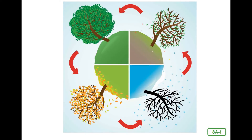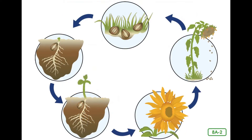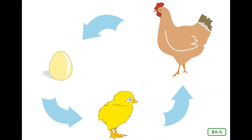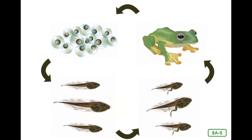Let's take a moment to review the different cycles we have learned about. The first cycle is the seasonal cycle — take some time to discuss what you know about it. Next is the plant life cycle, then the tree life cycle. Go ahead and discuss what you remember about the chicken life cycle, and lastly, the frog life cycle.